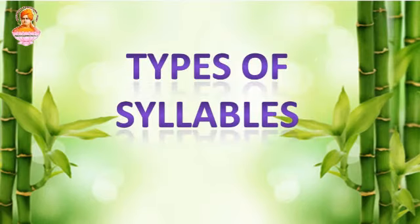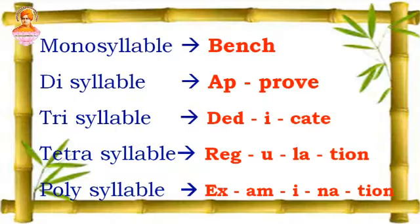Now let's see the types of syllables. The types of syllables are monosyllable, disyllable, trisyllable, tetrasyllable, and polysyllable. First, let's see what is monosyllable. Monosyllable means a word that has only one vowel sound. I am going to spell out the word bench. It's bench. I can hear only one vowel sound while pronouncing the word bench. So it is a monosyllabic word.